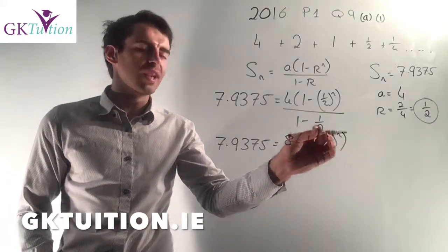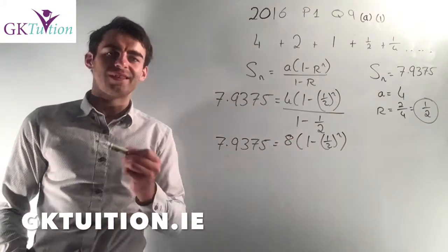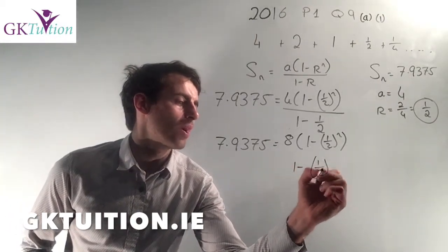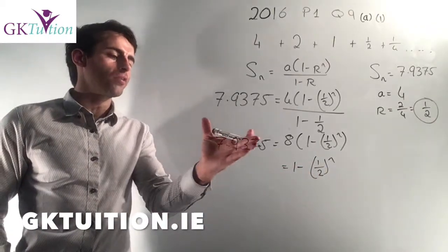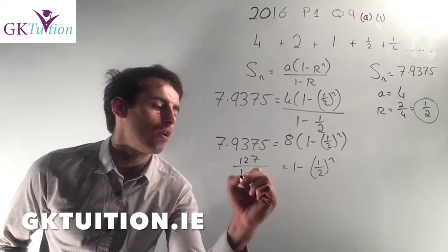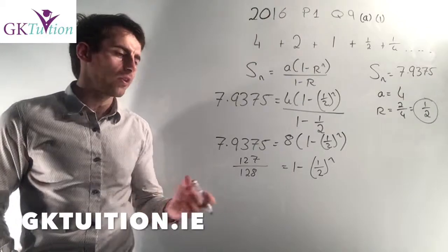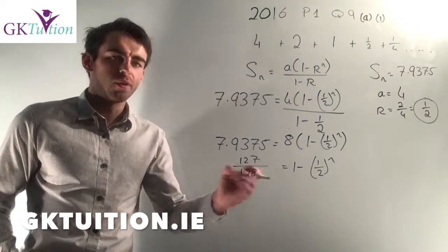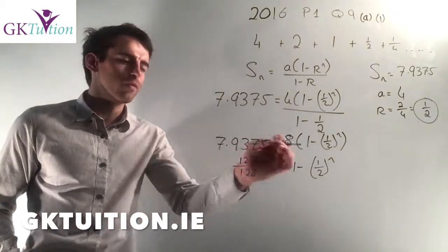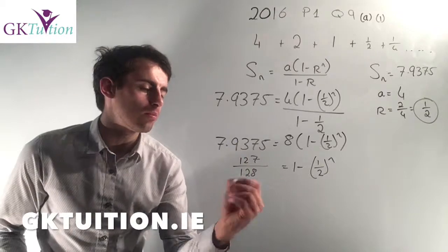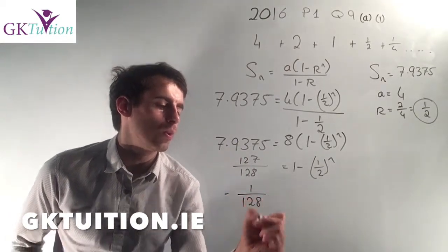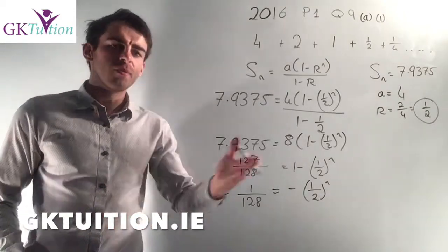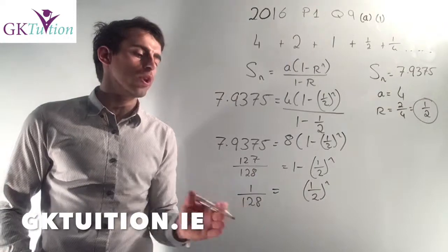I want to isolate my half to the power of N, so I'll bring the 8 to the other side by dividing both sides by 8. My left hand side will just be 1 minus a half to the power of N, while my right hand side is 7.9375 divided by 8, which is 127 over 128. Now I want to isolate the half to the power of N, so I need to subtract 1 from both sides. On the left I have 127 over 128 minus 1, which gives me minus 1 over 128. And on the right I just have minus a half to the power of N. Because I have a minus on both sides I can multiply across by minus 1 and change both signs to a plus.